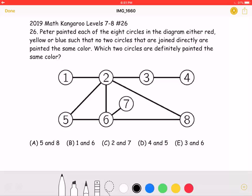This is the 2019 Math Kangaroo Level 7-8 Problem Number 26. Peter painted each of the eight circles in the diagram either red, yellow, or blue such that no two circles that are joined directly are painted the same color.